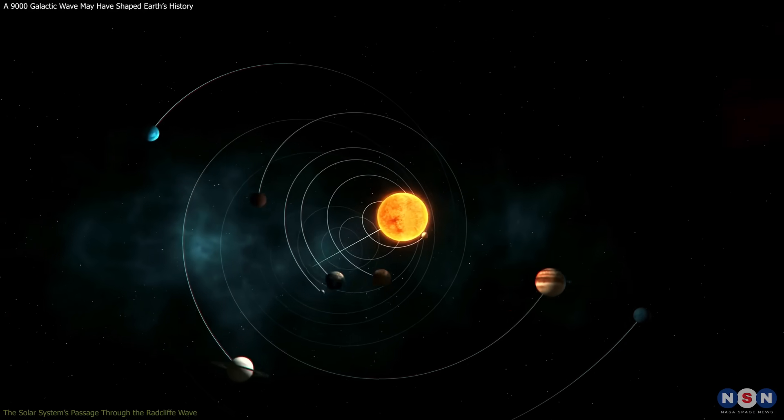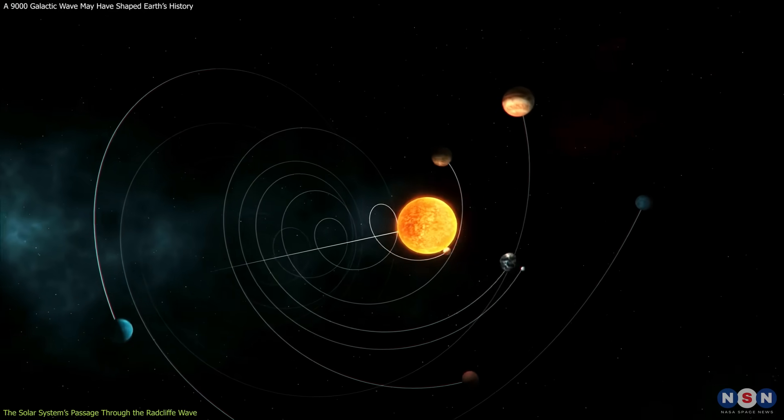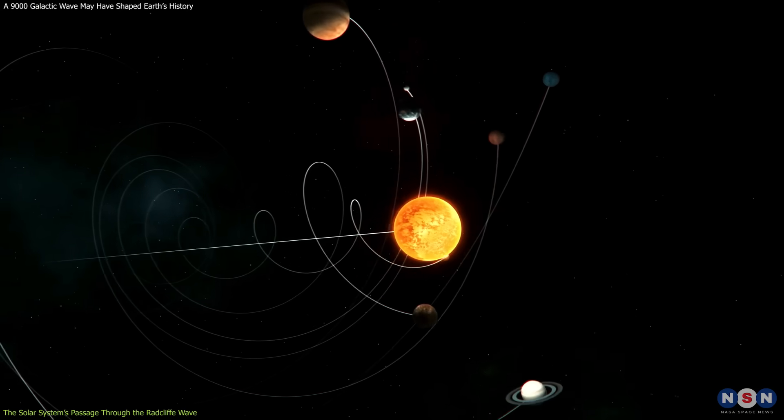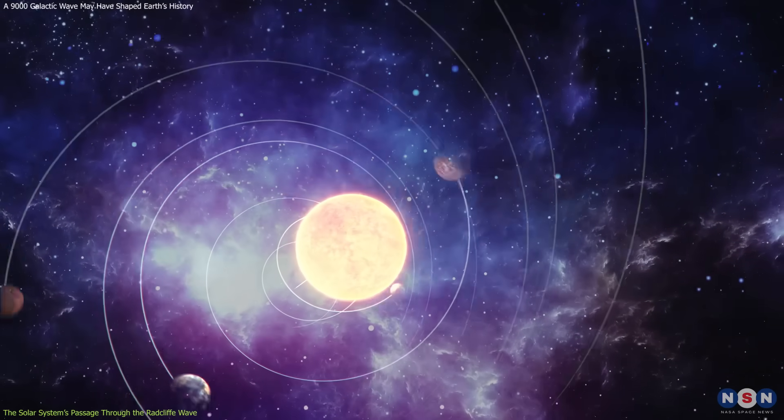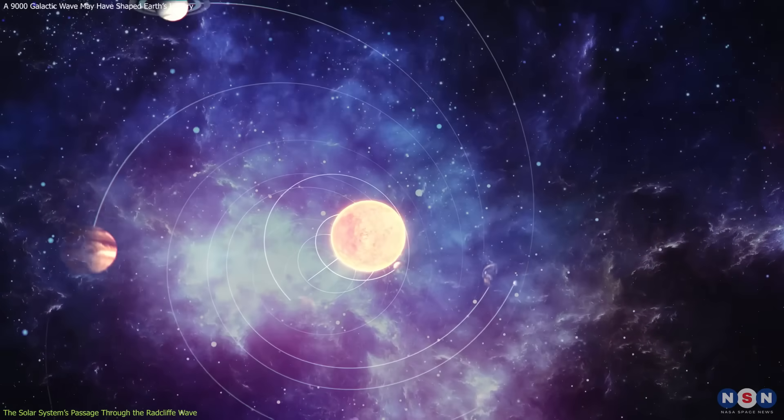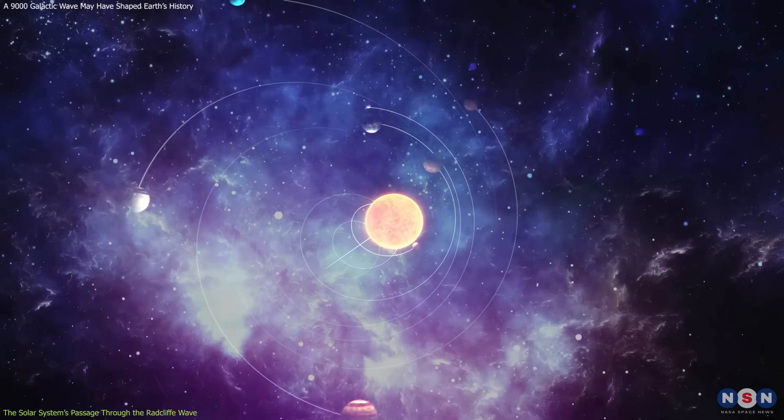Our solar system is constantly moving, orbiting the Milky Way's center approximately every 230 million years. Throughout this journey, it encounters different cosmic environments, from empty voids to dense molecular clouds.